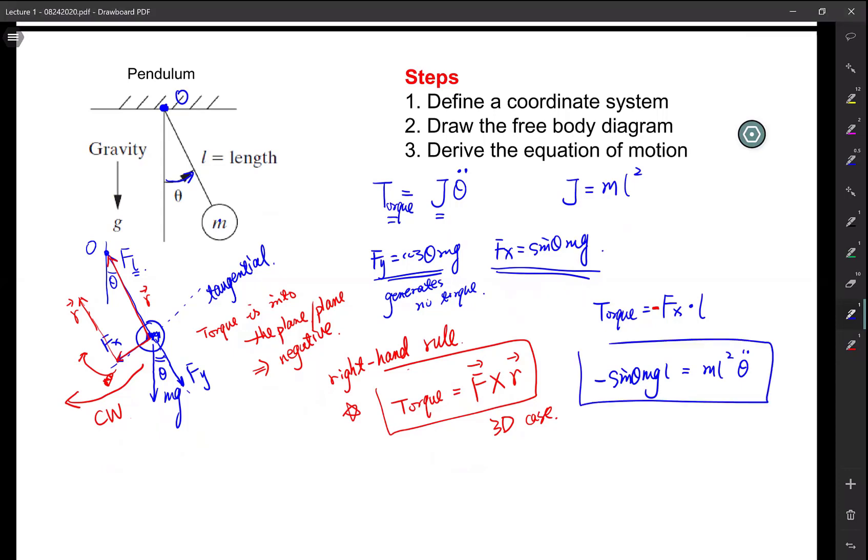For convenience, we usually move all the unknowns to one side, and then all the constant values on the right. In this case, the constant value is zero.